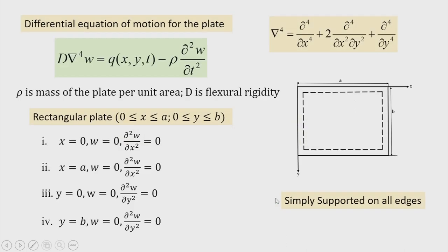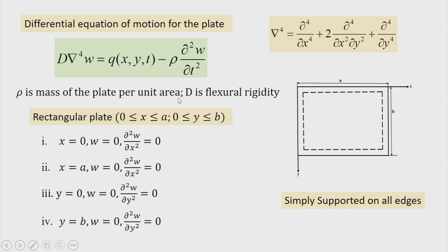Coming to the vibration of the plate in rectangular coordinates, the biharmonic operator is defined as del⁴ = del⁴/del x⁴ + 2*(del⁴/del x² del y²) + del⁴/del y⁴. Neglecting rotary inertia and shear deformation, the equation of motion is D * del⁴w = q(x,y,t) - rho * del²w/del t², where rho is mass per unit area of the plate and D is the flexural rigidity.